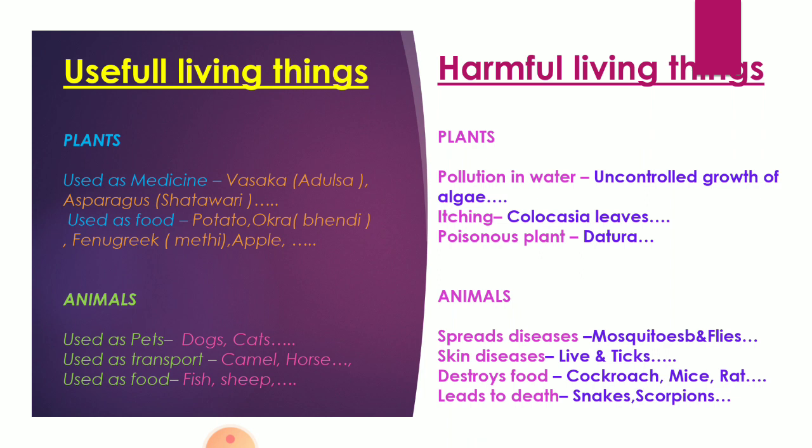Some useful animals: animals are used as pets, like dogs and cats. Some are used for transport, like camel, horse, and many more. And some are used as food, such as fish, sheep, goat, and so on.